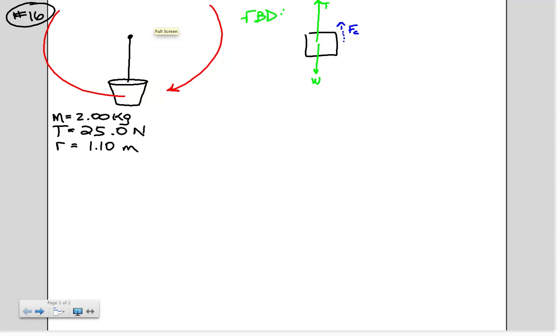Our free body diagram has been drawn. So now we just need to write our equation, which is simply going to be tension minus the weight is equal to our centripetal force. Our tension vector is up. Our weight vector is down at the bottom of the circle is equal to F sub C. I can go ahead and start doing some substitutions. I can say that T minus mg is equal to mv squared over r.